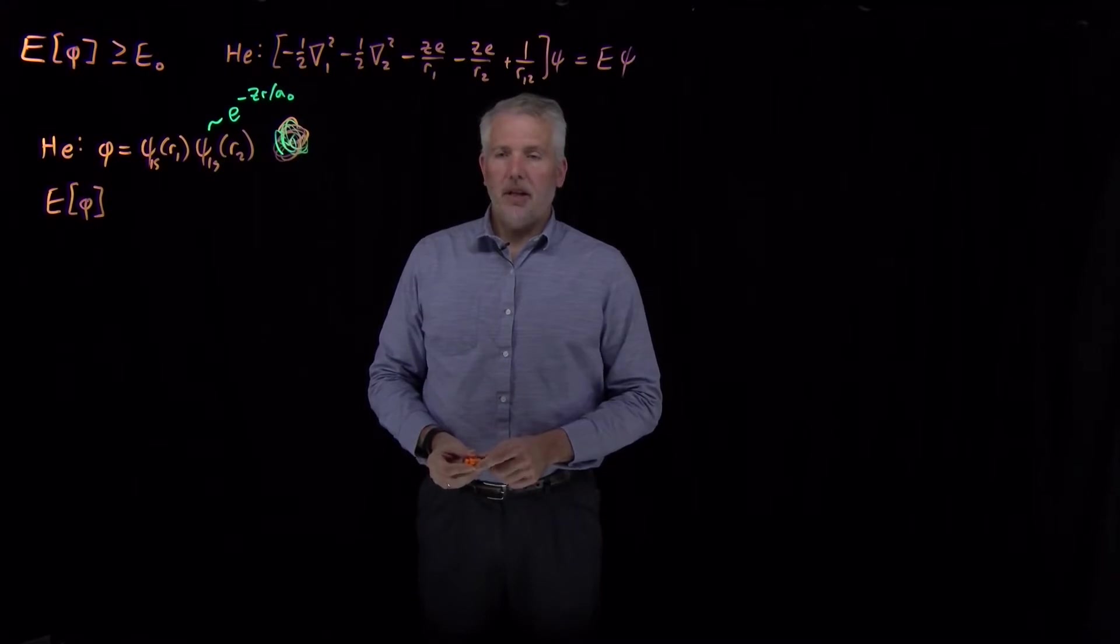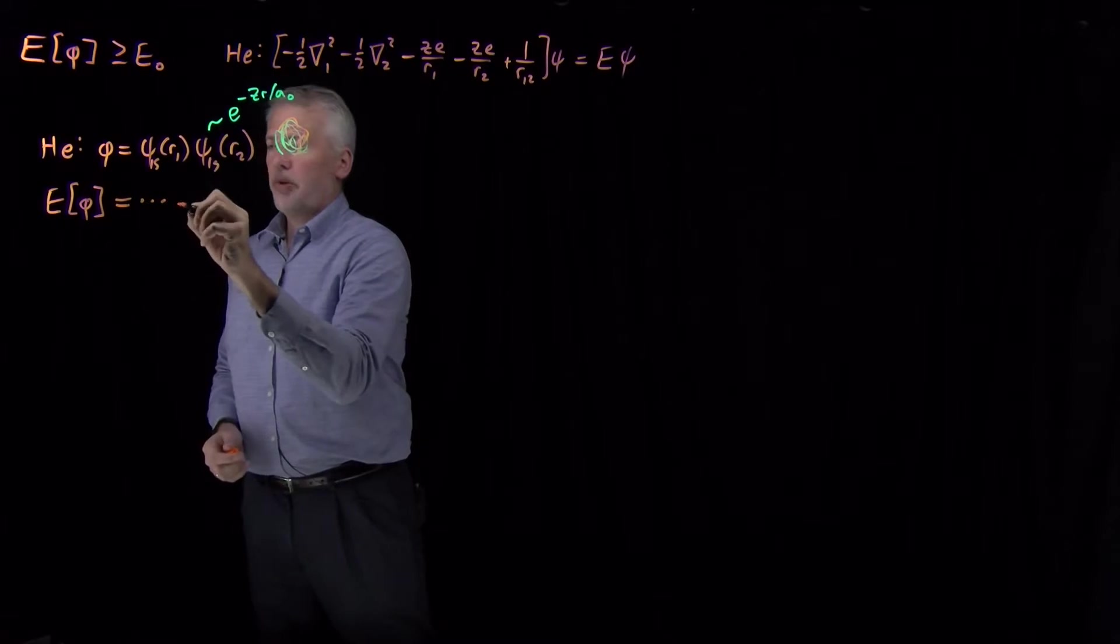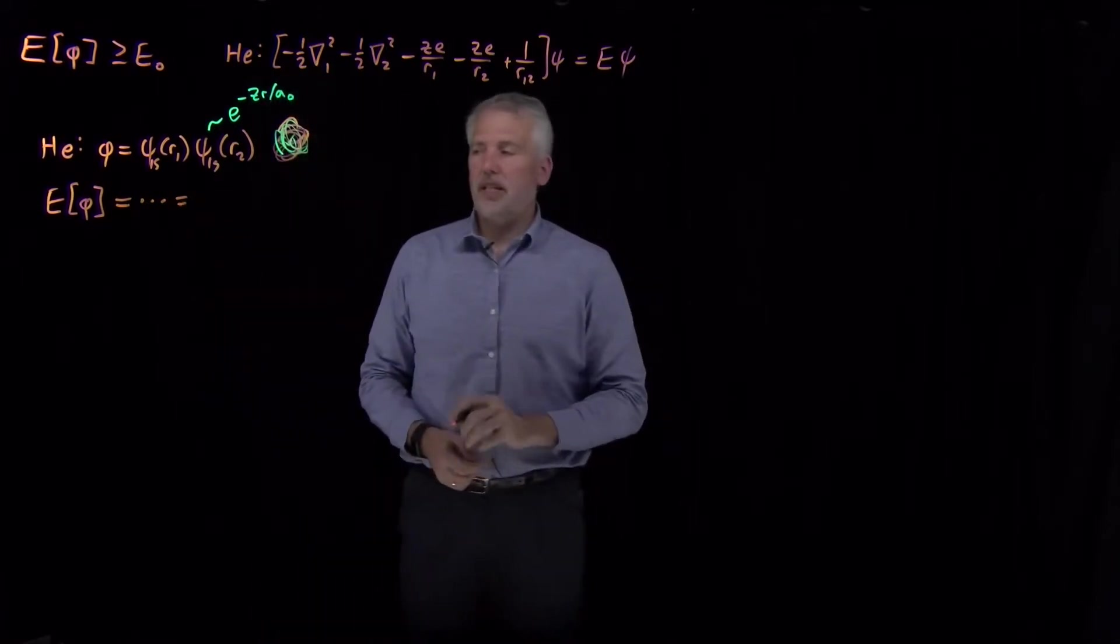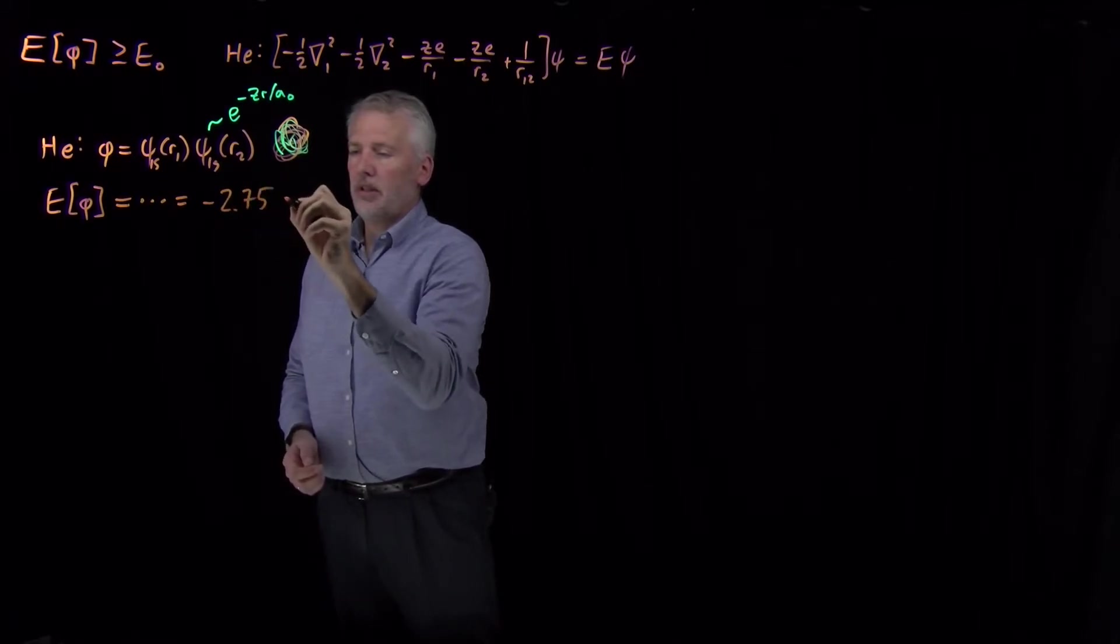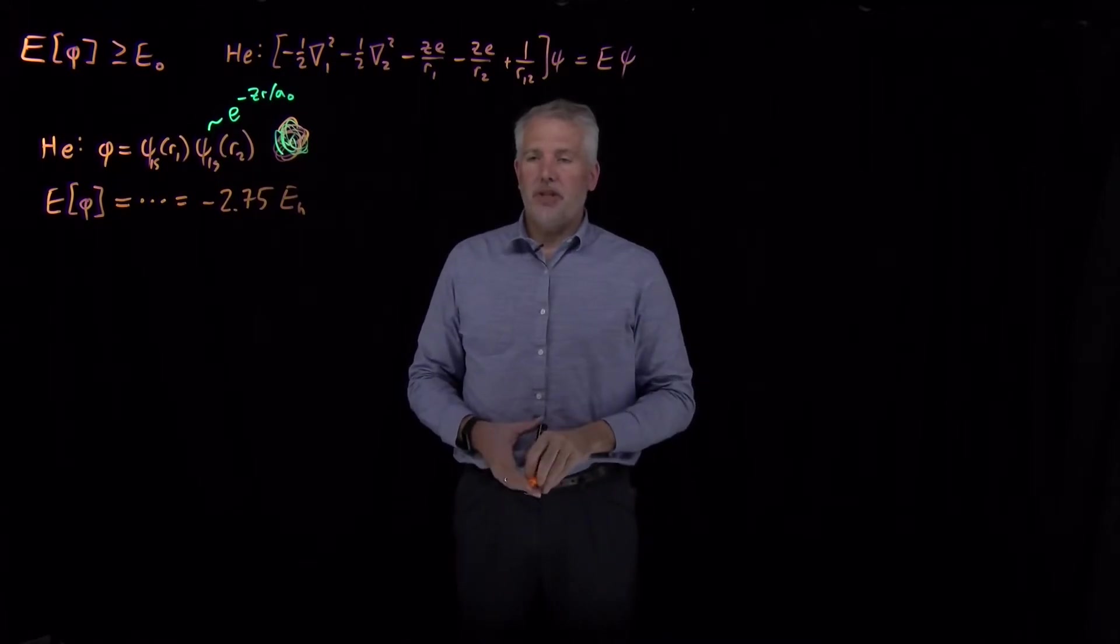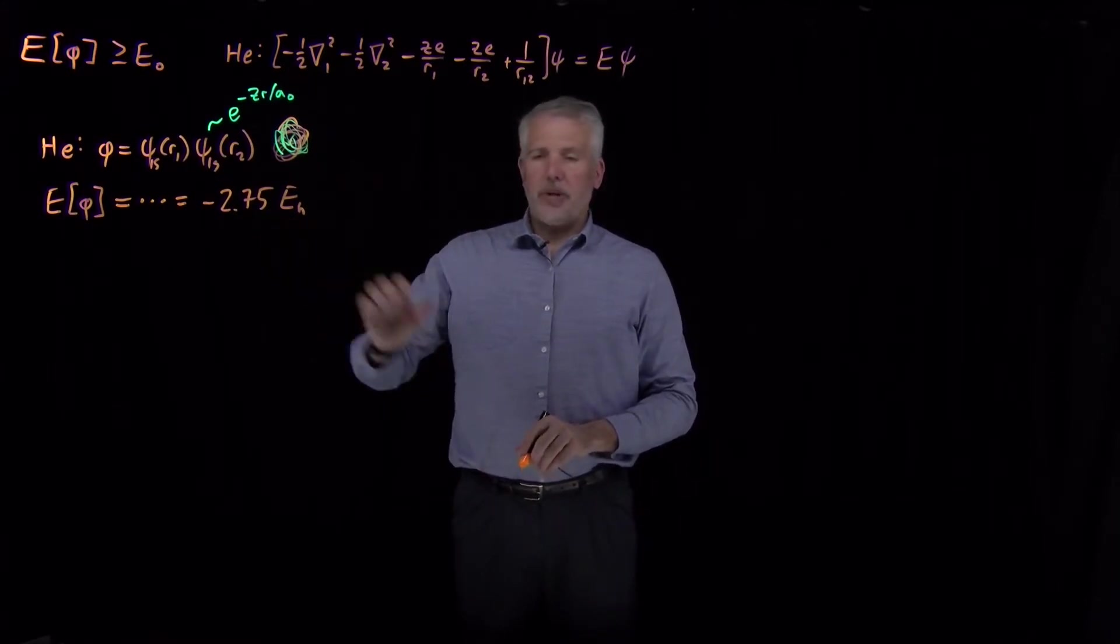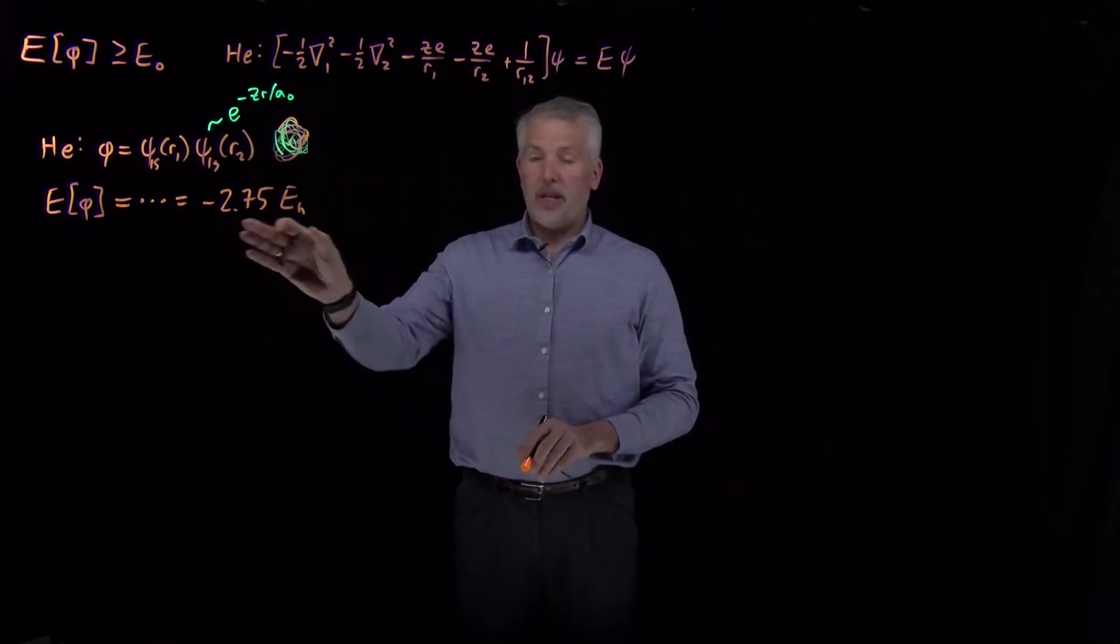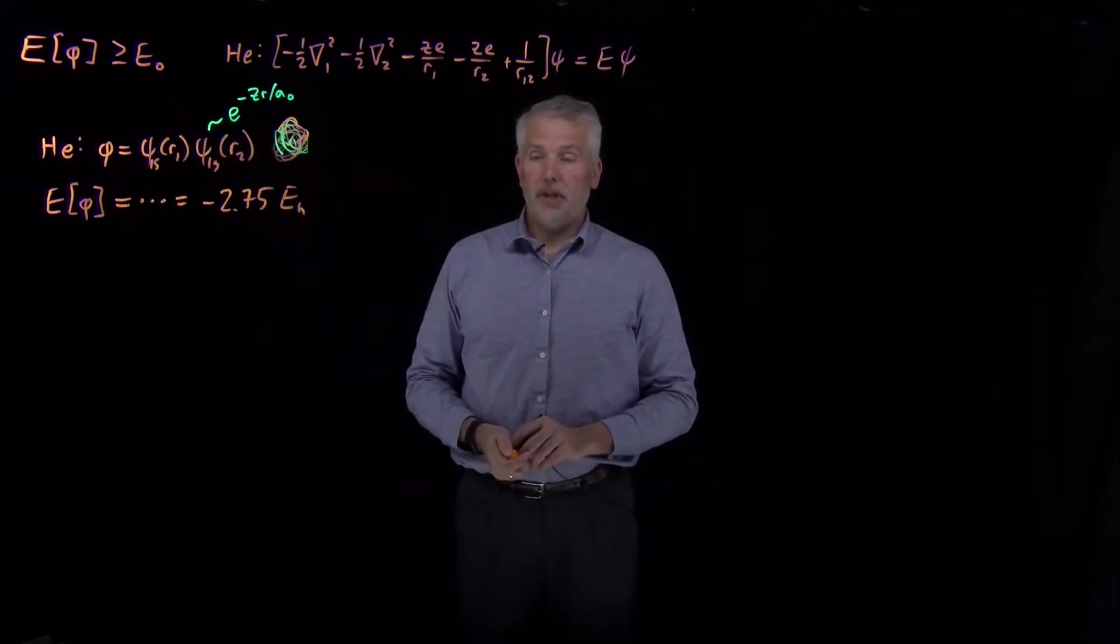We can plug those into the variational energy expression and do some integrals. That's a little bit of work, but it's not tremendously difficult. But if we skip over the details of that calculation, I can tell you that what we get if we plug in this guess for the wave function into the variational energy expression is we get minus 2.75 Hartrees. So as usual, when we can't solve Schrödinger's equation, we don't know whether that's a good answer or a bad answer.